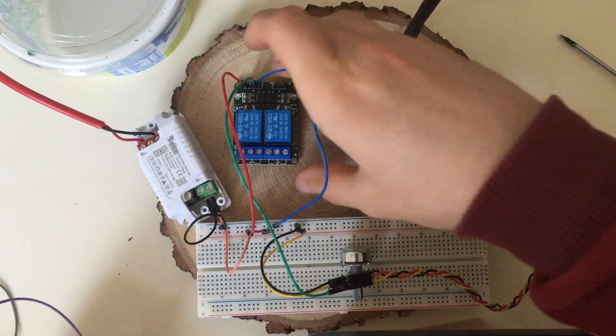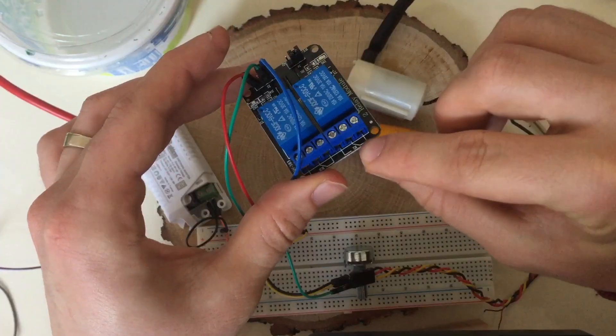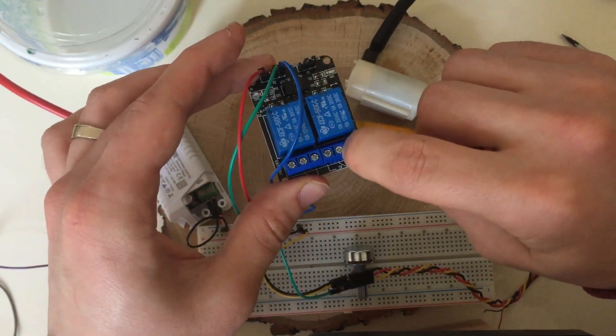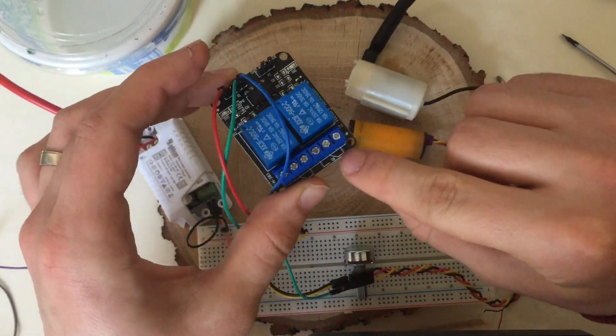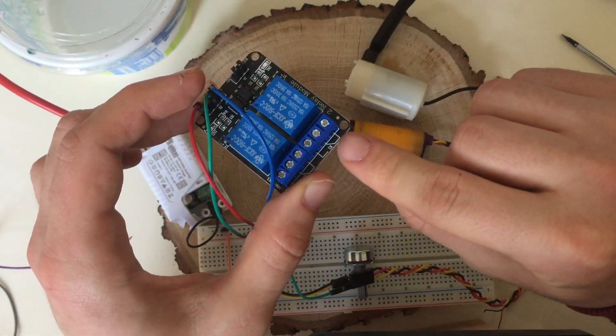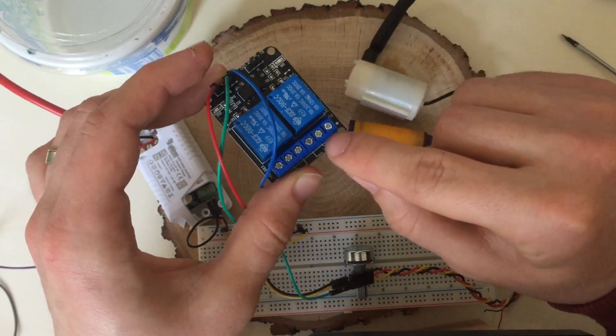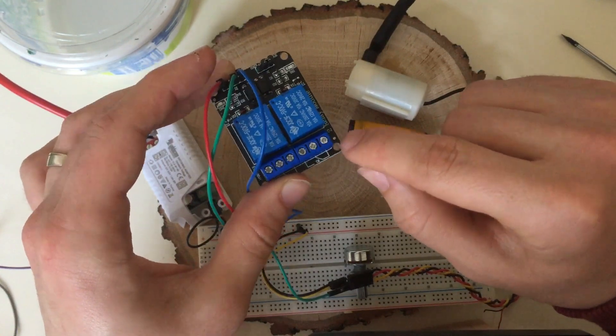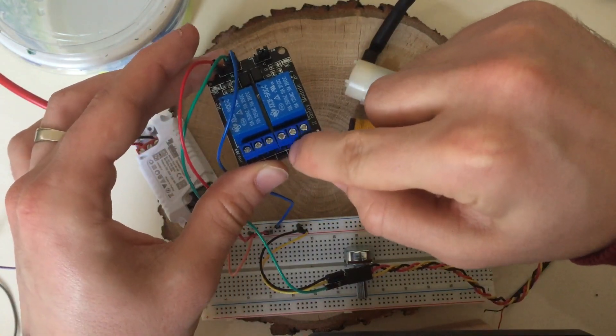Now I will connect the relay outputs to the pump. Here you have to be careful about these signs. These signs denote that these pins are normally closed. It means that when there is no input these two pins are connected. And the pin on the left is open. But when an input is applied the middle pin will be connected to the left pin. So we need to make the connection between middle and left.